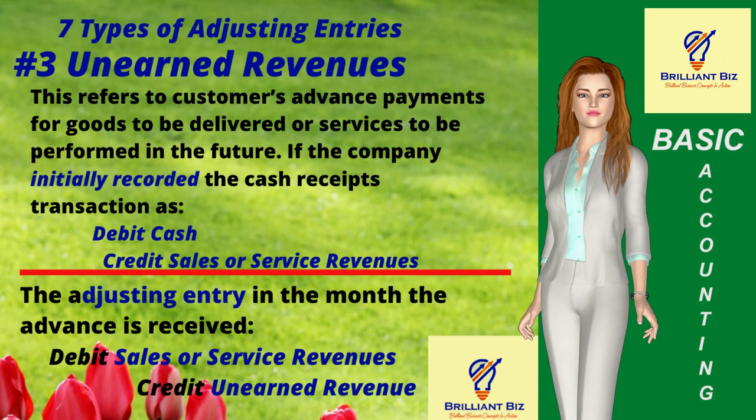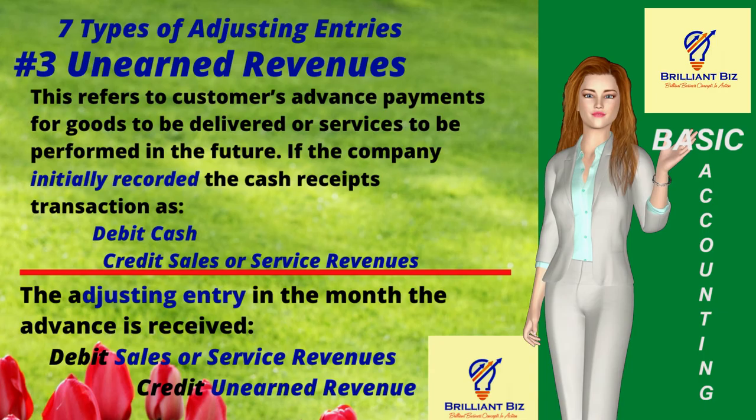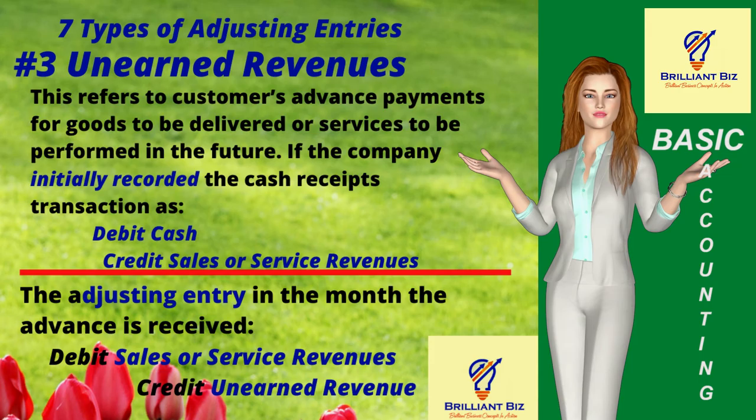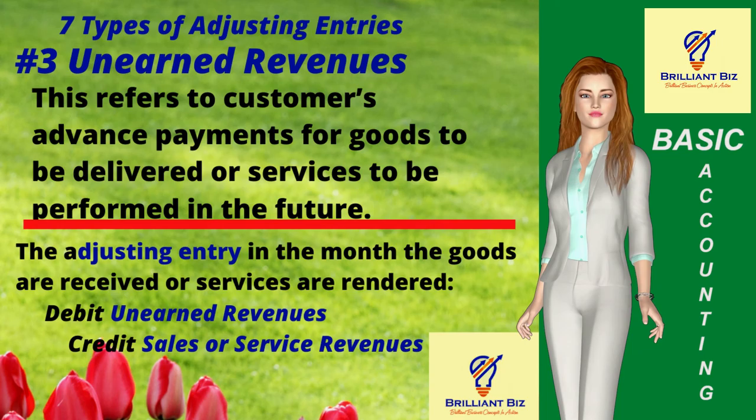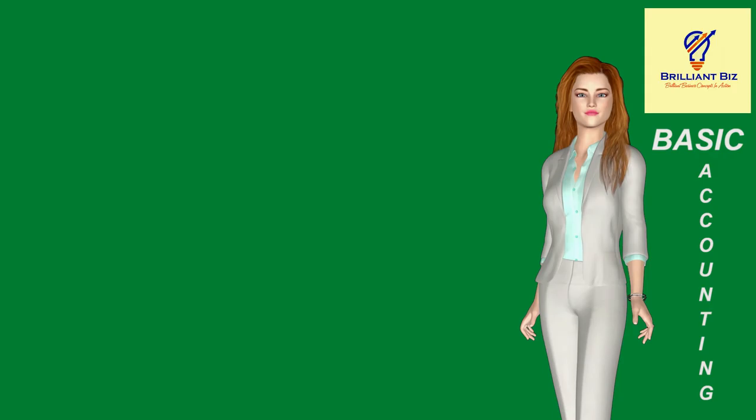Three: unearned revenues. This refers to a customer's advance payments for goods to be delivered or services to be performed in the future. If the company initially recorded the cash receipts transaction as debit cash and credit sales or service revenues, the month-end adjusting entry is debit sales or service revenues and credit unearned revenue. At the accounting period when the goods are delivered or the services are performed, the adjusting entry is debit unearned revenue and credit sales or service revenue.